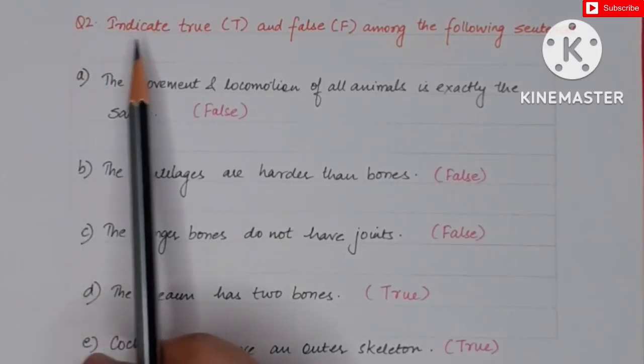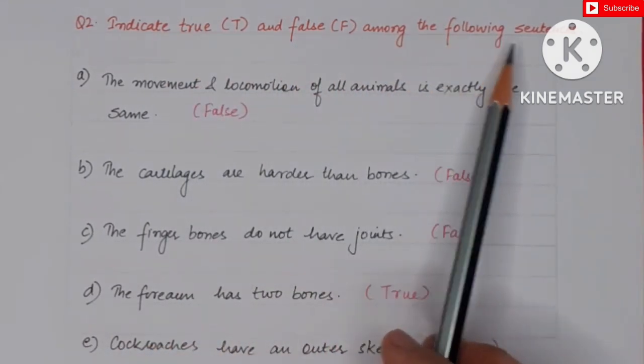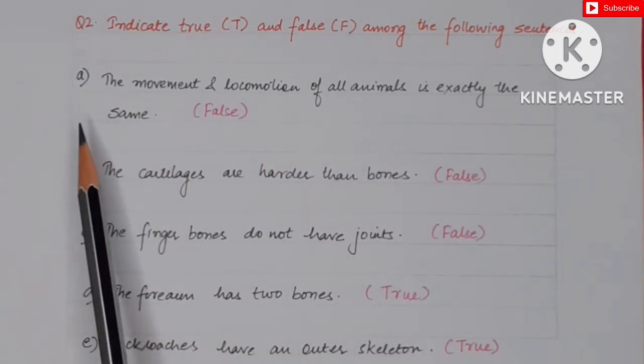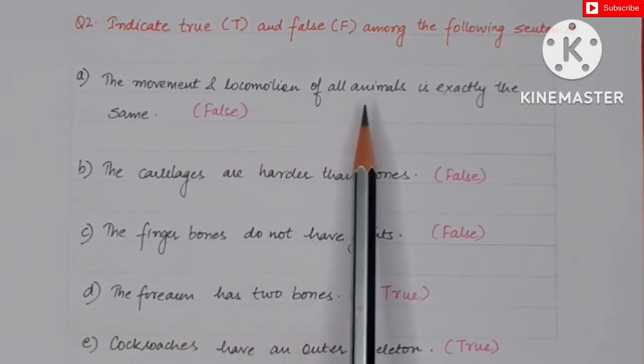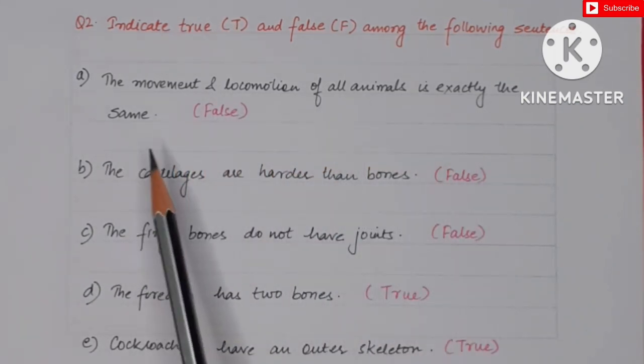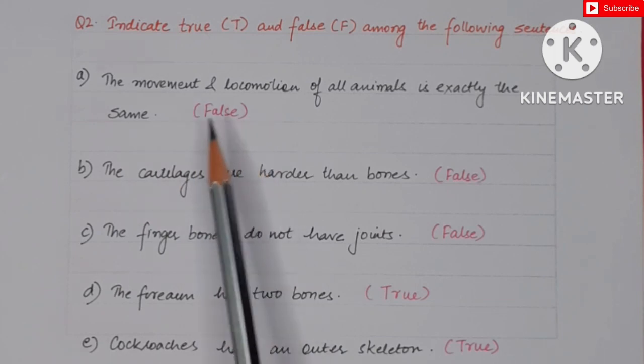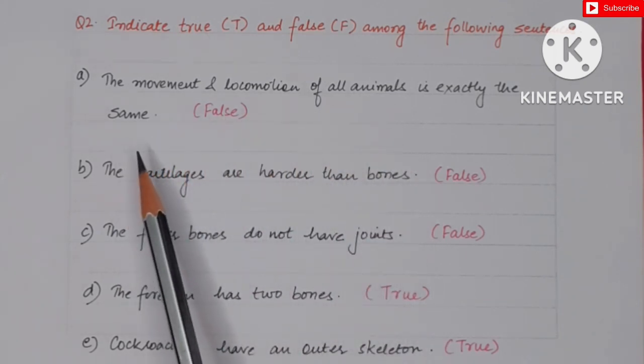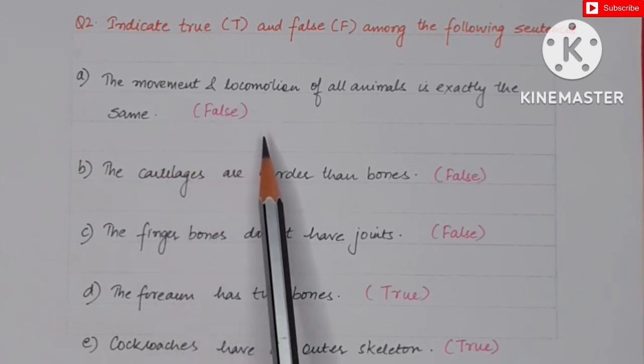Now question number two: indicate true and false among the following sentences. There are some sentences left. You have to read them and tell them which is true and which is false. So the first statement is: the movement and the locomotion of all animals is exactly the same. Is it the same for all animals?